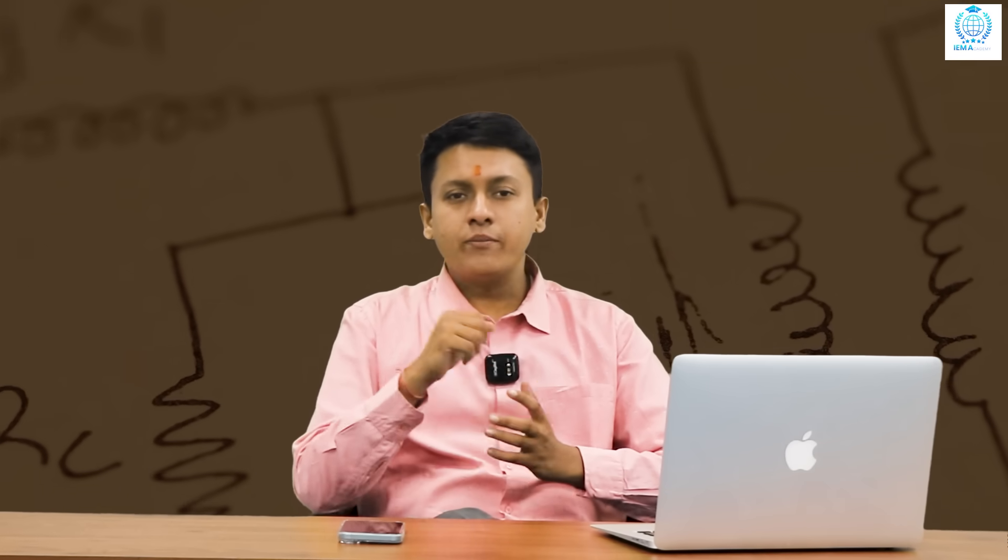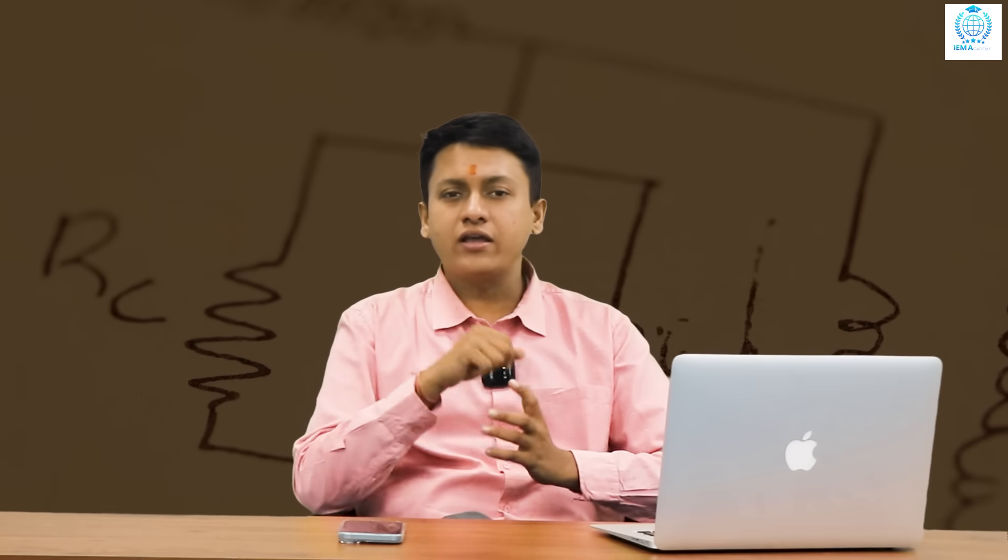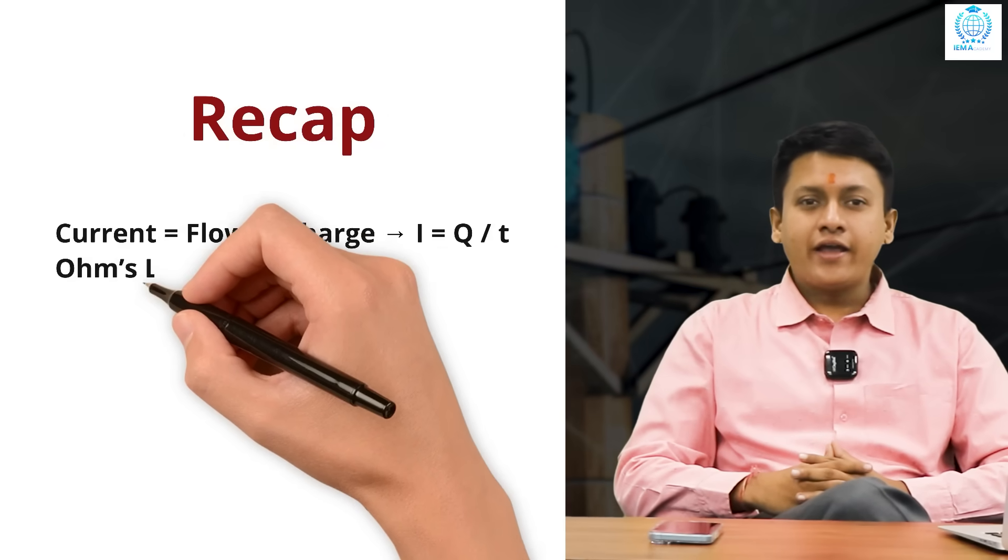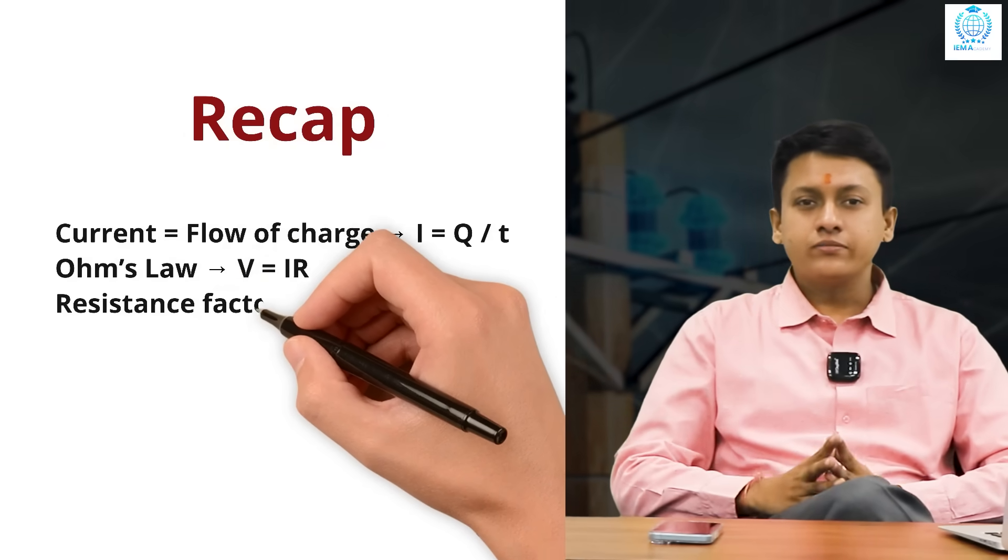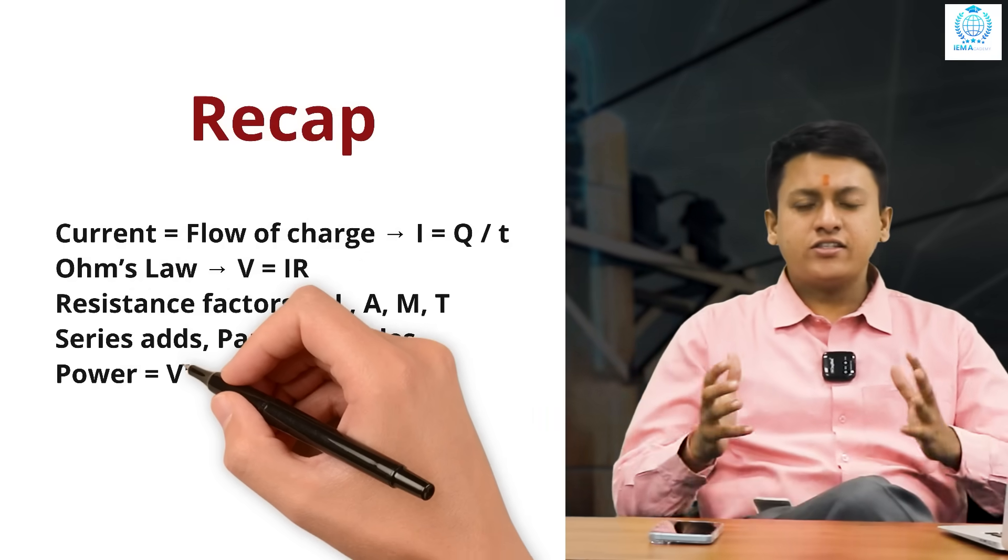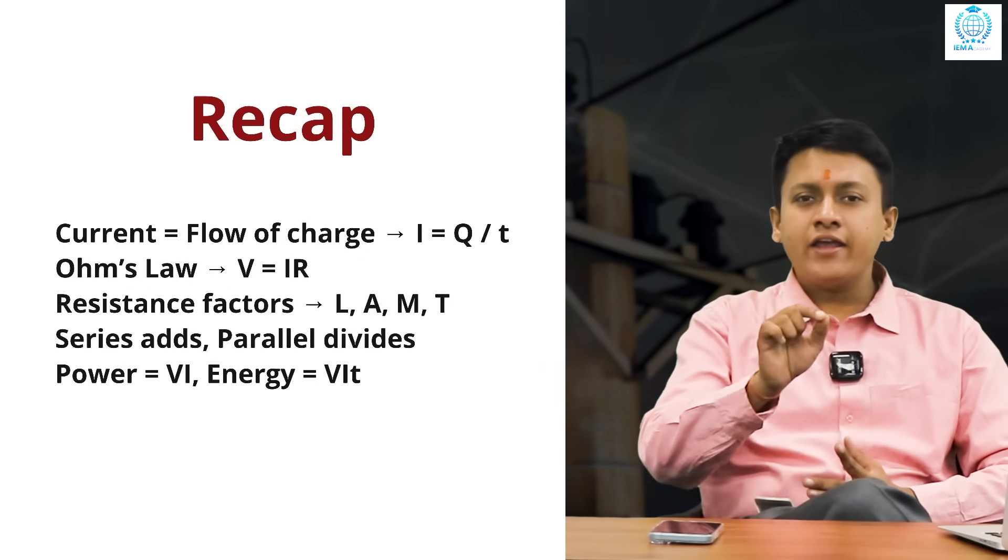Let me tell you a sample question. Find R if V equals 12 volts and I equals 2 amperes. So, the resistance equals V by I, which means 12 by 2 or 6 ohms. So, current equals flow of charge. I is equal to Q by T. Ohm's law, V is equal to I R. Resistance factors, L, A, M, T.